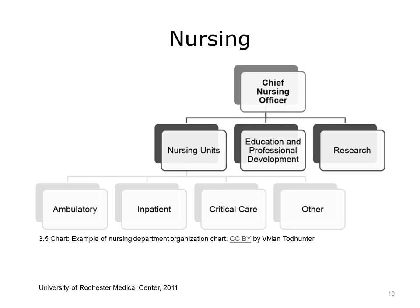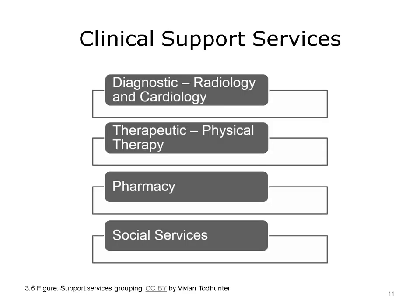The nursing division is also usually responsible for nursing education and professional development training, which sometimes includes training all hospital personnel in areas such as cardiopulmonary resuscitation. In academic hospitals, there may be ambulatory or inpatient units that function as research units. The management structure of clinical support services, also called allied health, varies depending on the healthcare organization, with some having a management-level officer reporting directly to the CEO, and others dividing it into diagnostic and therapeutic divisions.